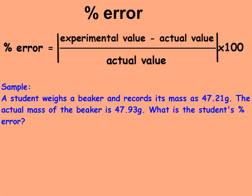Percent error is a way of determining how close you are to the true value. The formula you'll need to write down is percent error equals the absolute value of experimental value minus actual value over the actual value. These lines represent absolute value, which means if you get a negative percent error, you're just going to make it positive. Because it is a percent, make sure you multiply by 100 at the end.